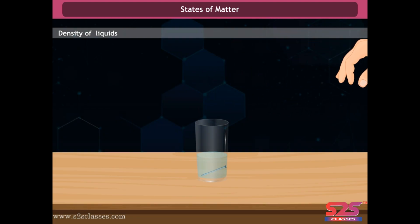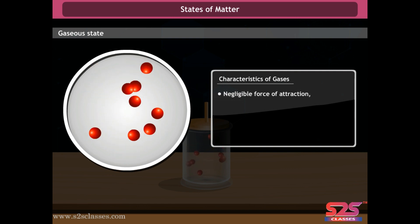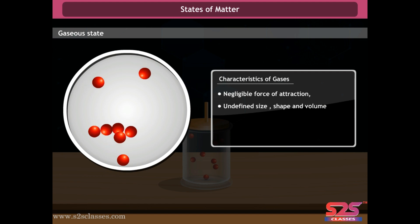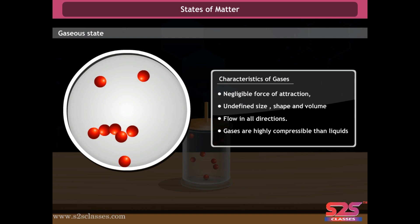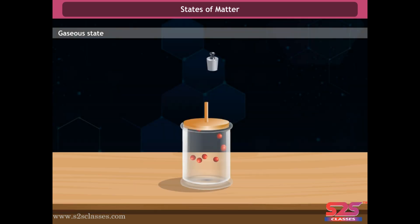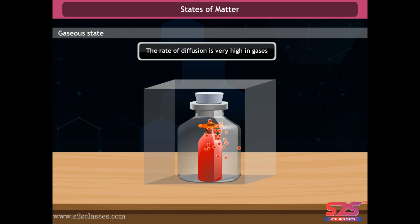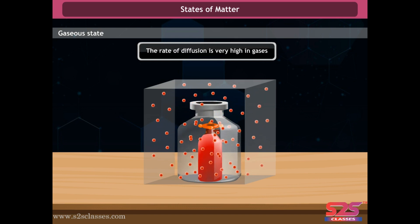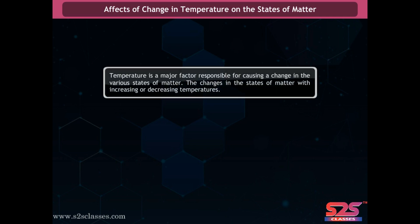In most cases, the density of a substance in the liquid state is lesser than in the solid state. Characteristics of gases: gases have negligible force of attraction, undefined size, shape, and volume, and flow in all directions. Gases are highly compressible, have a very high rate of diffusion — for example, nitrogen gas intermixes with air — and have lesser density than solids and liquids.